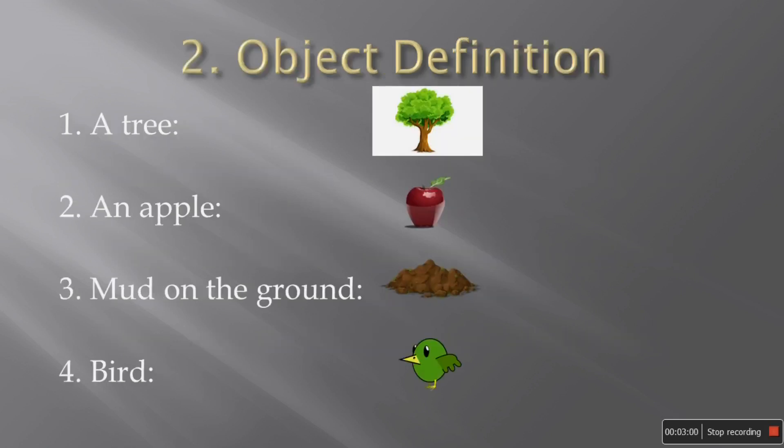Next one is object definition. So in our scene of animation, there is a tree. So we need a tree. We need an apple to fall down. Then we need the mud on the ground so that the apple bounces off. Fourth one is a bird that flies in and picks up the apples and flies away. So these are the four objects that are present in our animation.